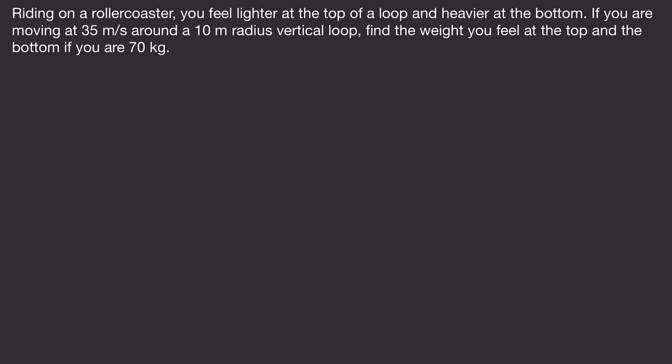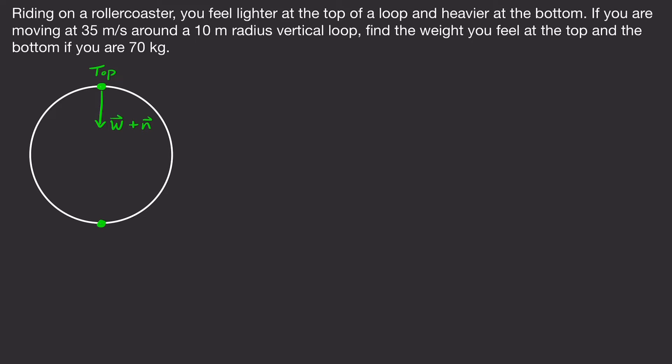Next problem: riding a roller coaster, you feel lighter at the top of a loop and heavier at the bottom. Moving at 35 m/s around a 10 meter radius vertical loop, find the weight you feel at the top and bottom if you are 70 kg. Draw the vertical loop. At the top, weight acts downward and the normal force also pushes downward (since you're underneath the track). At the bottom, the normal force pushes up and weight acts downward.